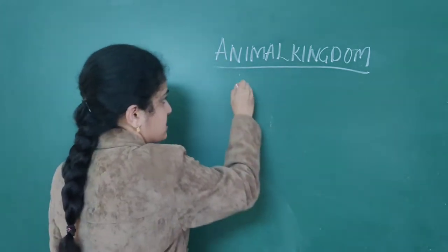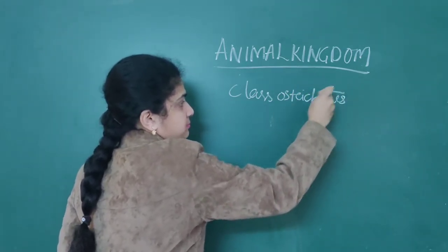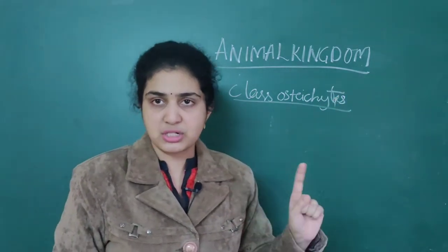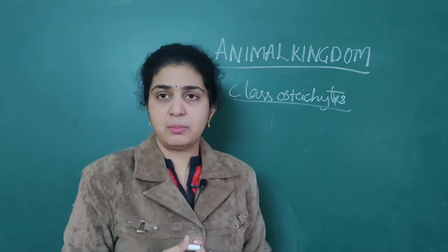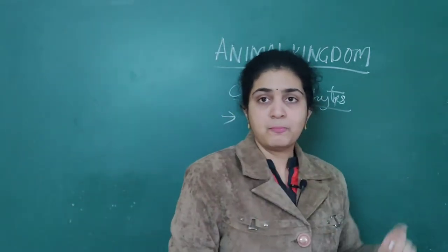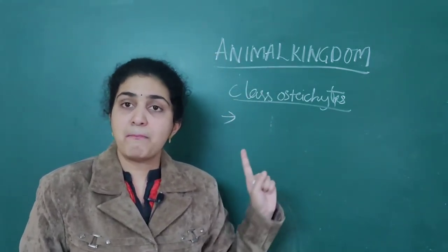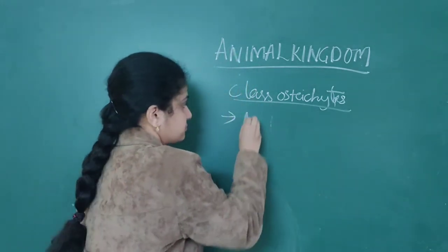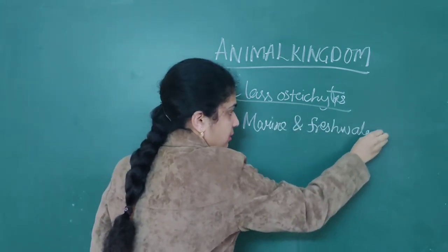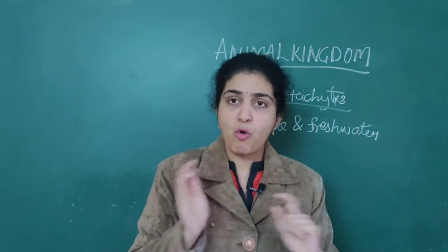Now we are coming to class Osteichthyes. As differences from Chondrichthyes: Chondrichthyes are marine organisms only, but when you come to Osteichthyes, these are marine as well as freshwater organisms. Both marine and freshwater habitats are included here.